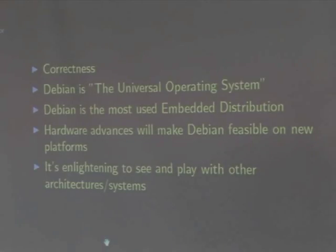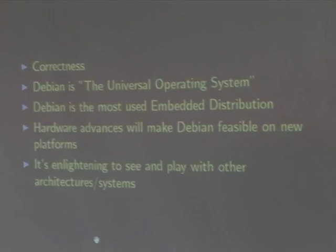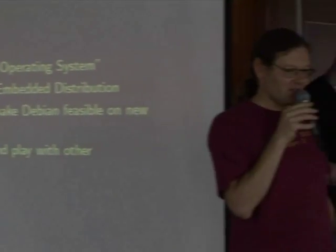Debian is also the most-used base for embedded distributions, although that might sound strange. What's meant is that Debian is very often used as a basis for people deriving their own custom distributions for embedded platforms. Embedded platforms tend to use all sorts of non-Intel or non-standard ARM32 CPU architectures, so portability is quite important there.